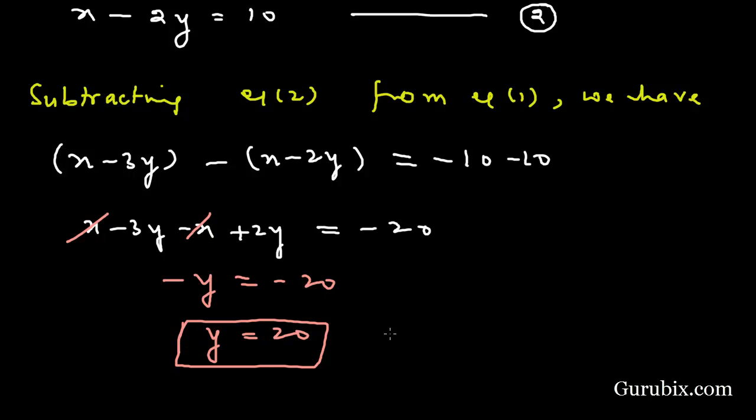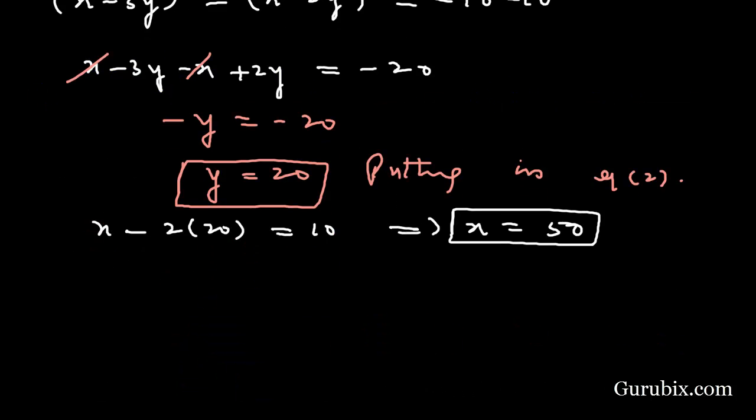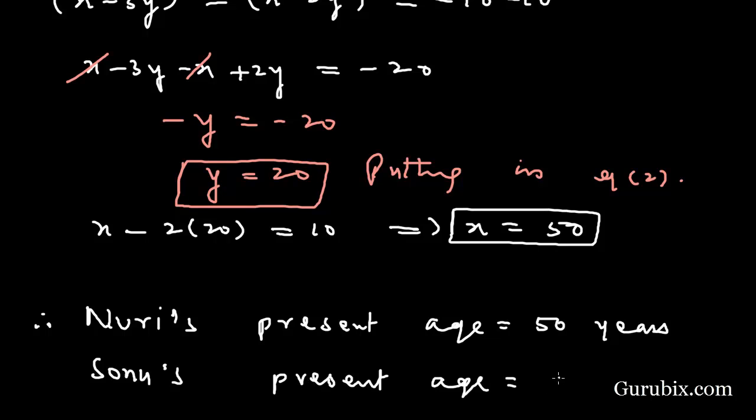We shall substitute this value in equation number 2 to get the value of x. Then it will be x minus 2 into 20 equals 10. This implies that x equals 50. So Nuri's present age is 50 years. Sonu's present age is 20 years. This is the solution of the question.